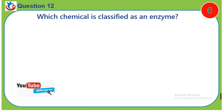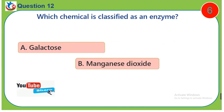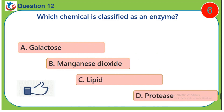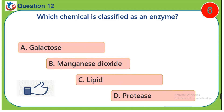Question 12. Which of these chemicals is classified as an enzyme? A. Galactose. B. Manganese dioxide. C. Lipid. D. Protease.